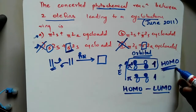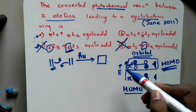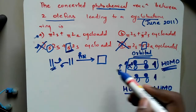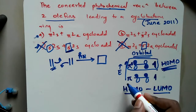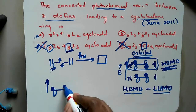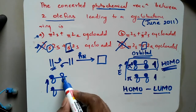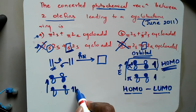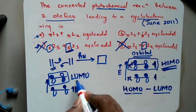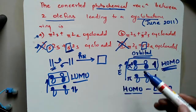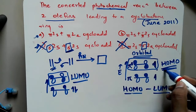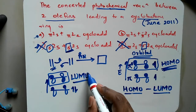Under photochemical conditions, only very few ethene molecules will undergo excitation; the rest remain in the ground state. For those in the ground state, both electrons are in the lower level — that is their HOMO. But for the excited ethene molecules, the next higher orbital becomes the new HOMO, while for the majority of ground state molecules it remains the LUMO.